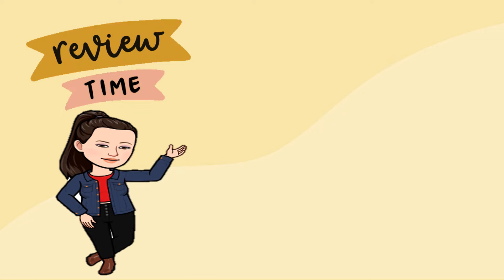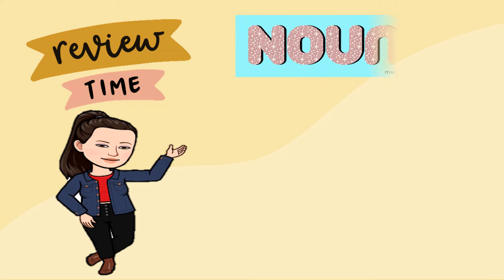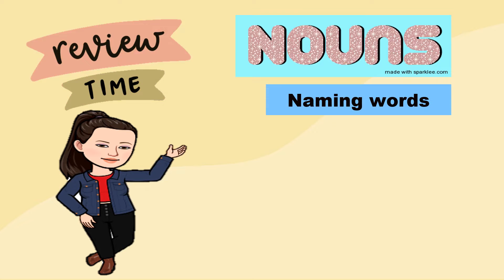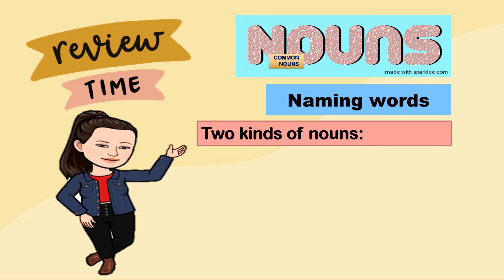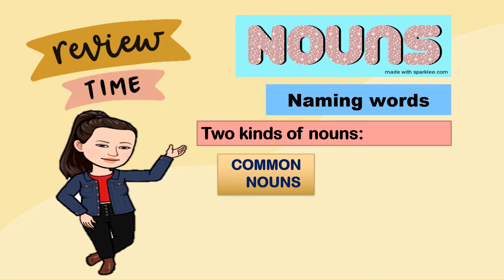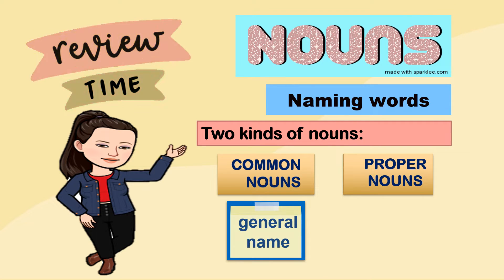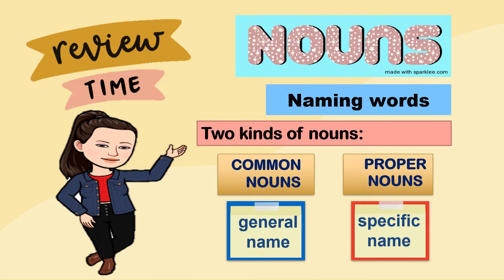So what do we call the names of persons, places, animals, and things? Yes, we call them as nouns. Nouns are the naming words. But aside from that, we also discussed the two kinds of nouns. So what are the two kinds of nouns, children? First we have common nouns and the other one is proper nouns. Common nouns are the general names and they begin with a small letter. Proper nouns are the specific or exact names of nouns, and they always begin with a big letter.